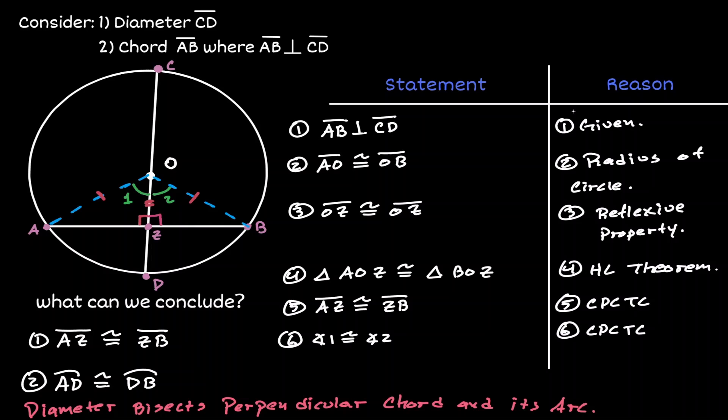Angle 1 is a central angle between the line segment AO and AD. Notice that the vertex is at the center and angle 2 is also another central angle between the line segment OD and OB. So here we have two congruent central angles.